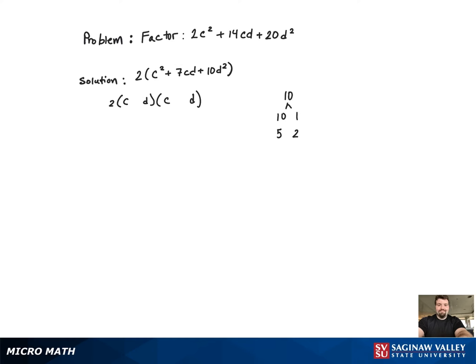So 10 can factor as either 10 and 1 or 5 and 2, and 5 and 2 are the ones that will sum to 7.